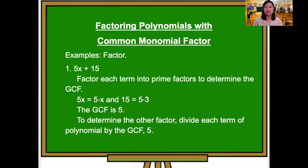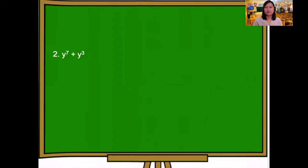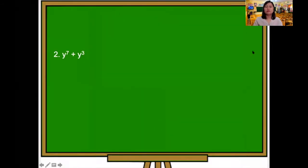To determine the other factor, divide each term of the polynomial by the greatest common factor, which is 5. 5x divided by 5 is x, and 15 divided by 5 is 3. Therefore, 5x plus 15 is equal to 5 times the quantity x plus 3.